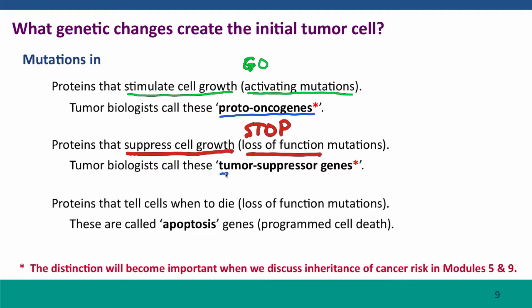Another kind of mutation involves proteins that suppress cell growth — these would be like the 'stop' gene described previously. The kinds of mutations that cause tumor behavior here are loss-of-function mutations in stop genes. Tumor biologists call these tumor suppressor genes, because when they're working, they prevent tumors from forming. Finally, there's a third class of mutations that can create an initial tumor cell: mutations in the proteins that tell cells when to die. This occurs as part of a specific regulatory process called apoptosis — the programmed cell death that normally occurs in many of our cells and that fails to occur in many tumor cells.